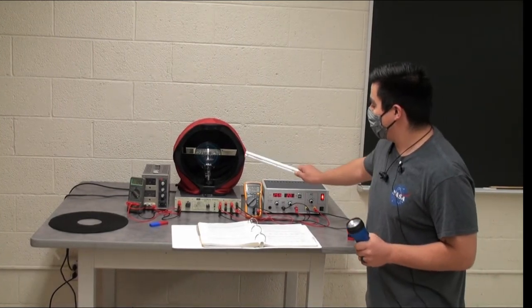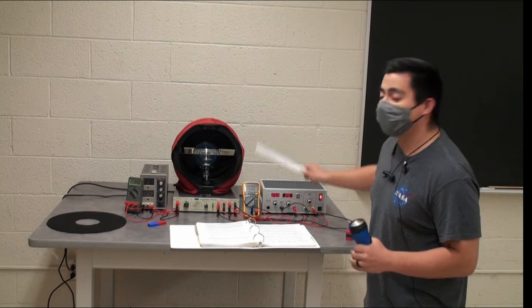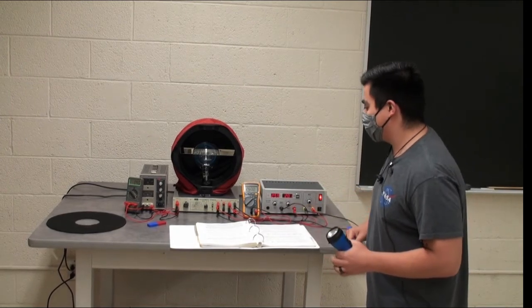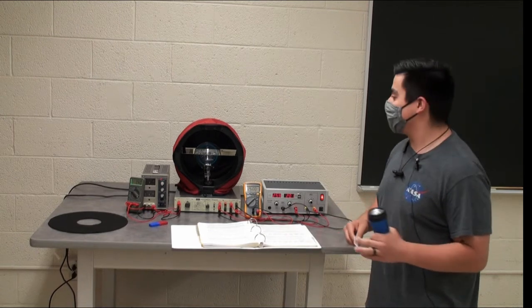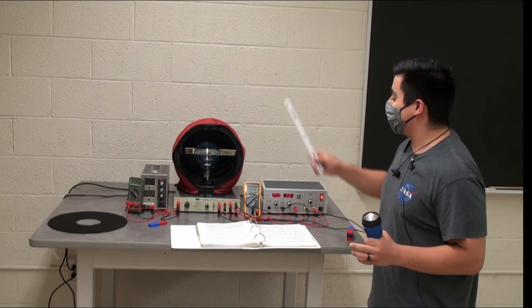So first we have the Helmholtz coils. There are an N number of turns, your book will tell you how many turns are in there, of coil that has electricity flowing through, obviously, and that's going to produce a magnetic field.